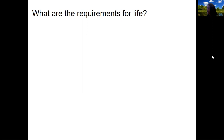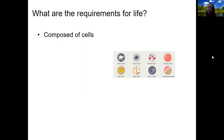So the first requirement is that life is composed of cells. All life is made up of either one or more cells. Humans are obviously multicellular, and this is a requirement that viruses don't have, so most biologists don't consider viruses alive. Humans obviously have many cell types — we'll talk about many of those. This is cell theory: the idea that all life is composed of one or more cells.